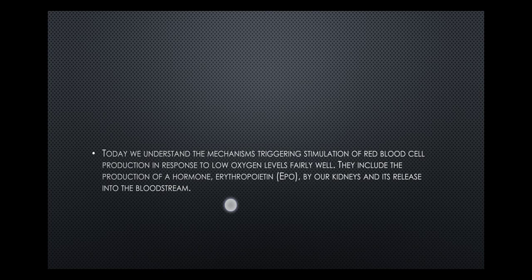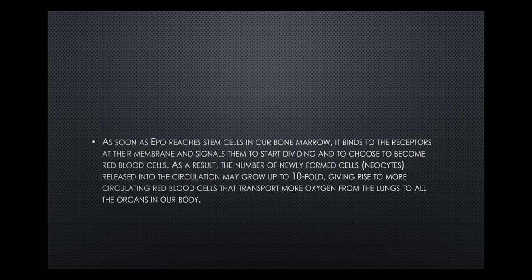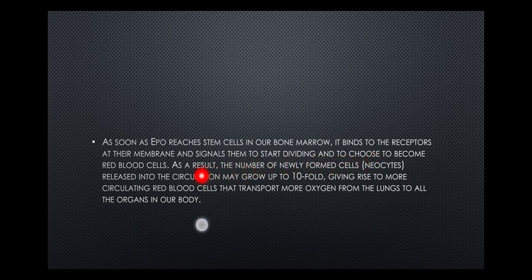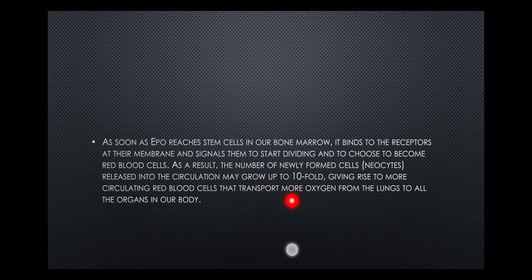Today we understand the mechanisms triggering stimulation of red blood cell production in response to low oxygen levels. These include the production of the hormone erythropoietin by the kidneys and its release into the bloodstream. As soon as erythropoietin reaches stem cells in the bone marrow, it binds to receptors at their membrane and signals them to start dividing and to become red blood cells. As a result, the number of newly formed neocytes released into the circulation can grow up to tenfold, giving rise to more circulating red blood cells that transport more oxygen from the lungs to all organs in the body. The key is erythropoietin.